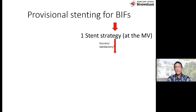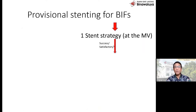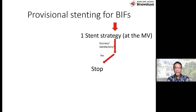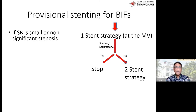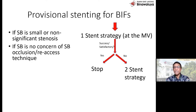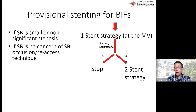Provisional stenting itu sebenarnya istilahnya hanya sementara saja. Jadi kita harus berpikir bahwa kalau bisa cukup one stent strategy. 70% dari bifurcation itu biasanya cukup dengan provisional stenting saja. Kalau cukup, stop. Seperti pada case yang tadi, baik yang circumflex maupun di LAD, kalau sudah cukup satu, jangan dua. Kalau side branch-nya kompromis, barulah kita two stent strategy. One stent strategy itu kalau side branch-nya kecil, tidak ada kemungkinan untuk terjadi oklusi, atau aksesnya susah. Ini harus pakai paling tidak protection wire.